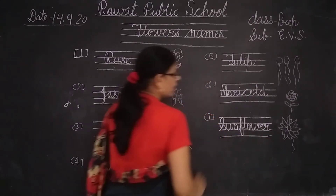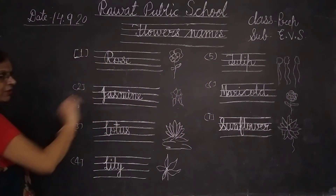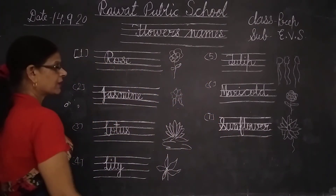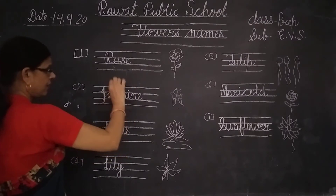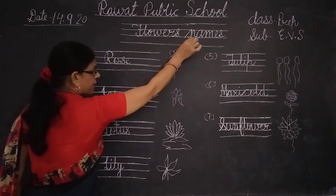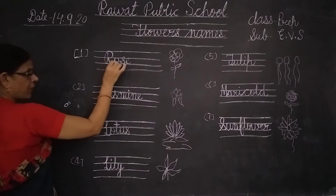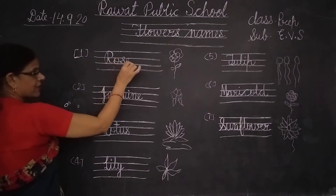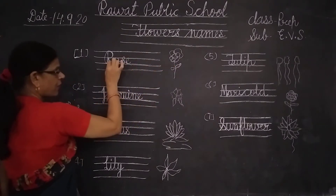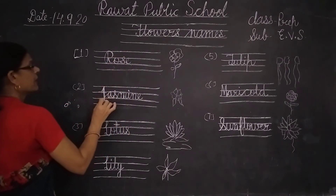Okay kids, now repeat it again. I am doing it again. Flowers name. Okay kids: R-O-S-E. Rose. R-O-S-E. Rose. Rose means flower.